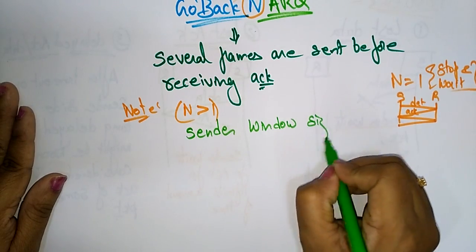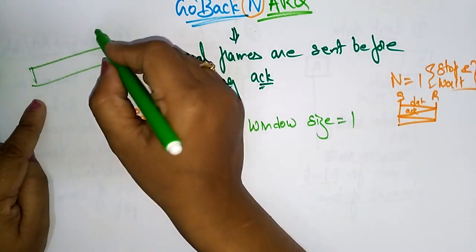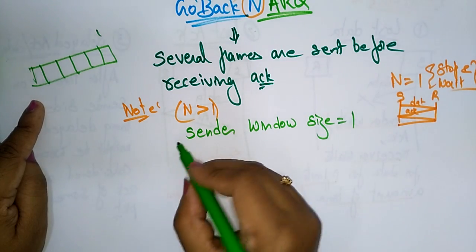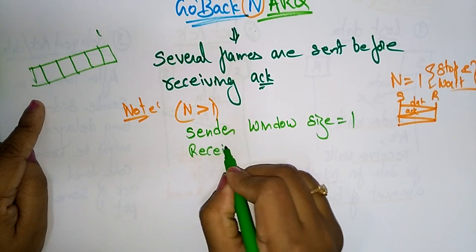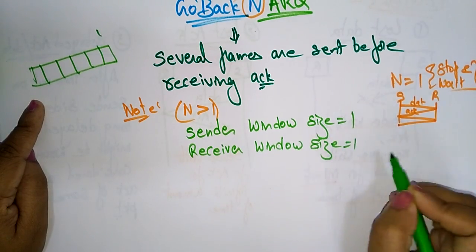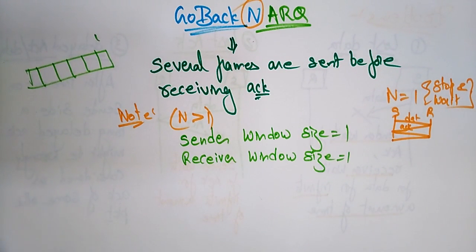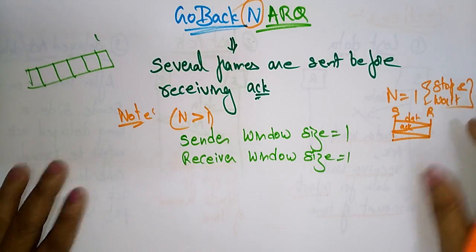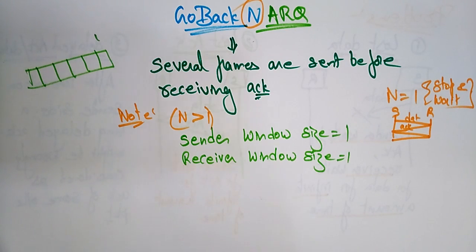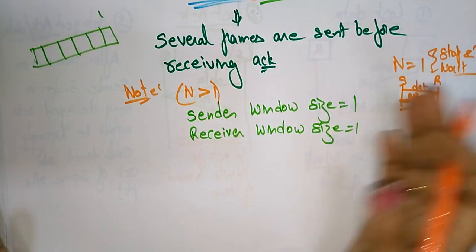In Stop-and-Wait, the sender window size is one. But in Go-Back-N, the sender window size contains many frames, while the receiver window size is also one. Go-Back-N is a mechanism to detect and control errors in the data link layer.